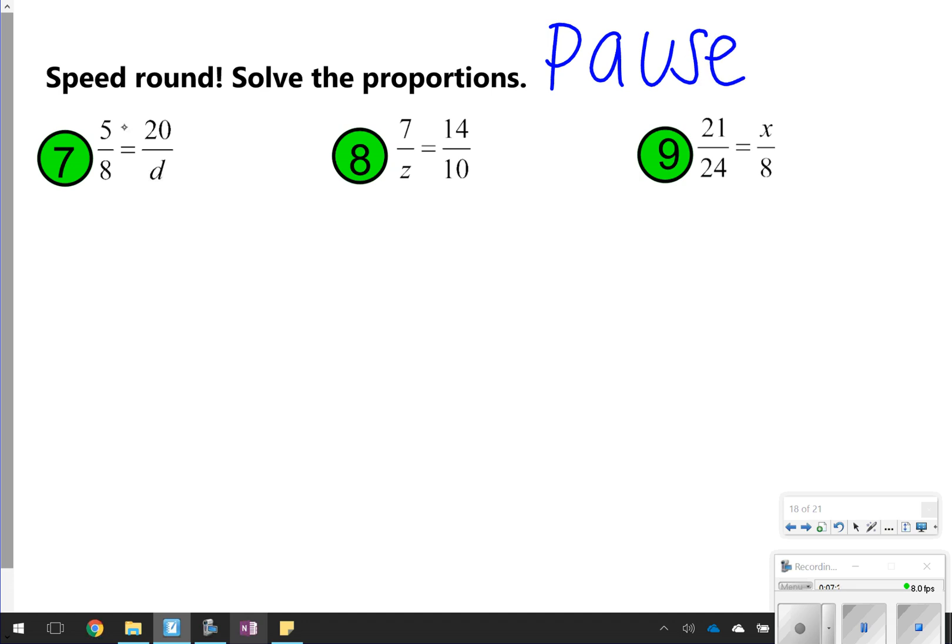What I noticed about number seven is five can be multiplied by four to get to 20. So I know eight times four can be 32. Remember, proportions are just equivalent fractions, so you're essentially just figuring out how were they made equivalent. Number eight, I can do seven times two to get 14. So what times two to get to 10? And that's going to be five. And then over here, I know that I did 24 divided by three to get to eight. So 21 divided by three can give me seven.